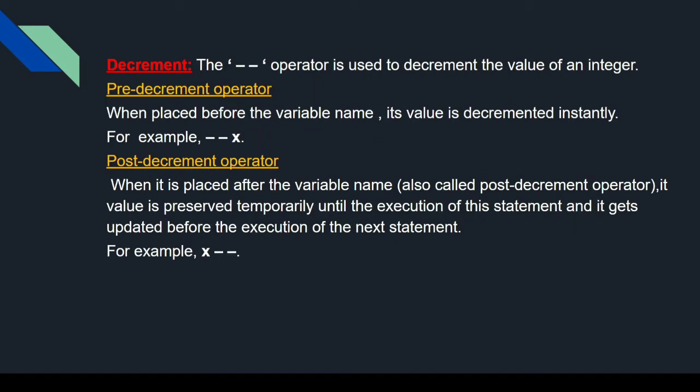Decrement क्या होता है — जैसे increment में 1 plus होता है, decrement में 1 minus होता है. Pre-decrement instantly decrease by minus 1. Post-decrement: when it is placed after the variable name, also called post-decrement operator, its value is preserved temporarily until execution of the statement and it gets updated before the execution of the next statement.